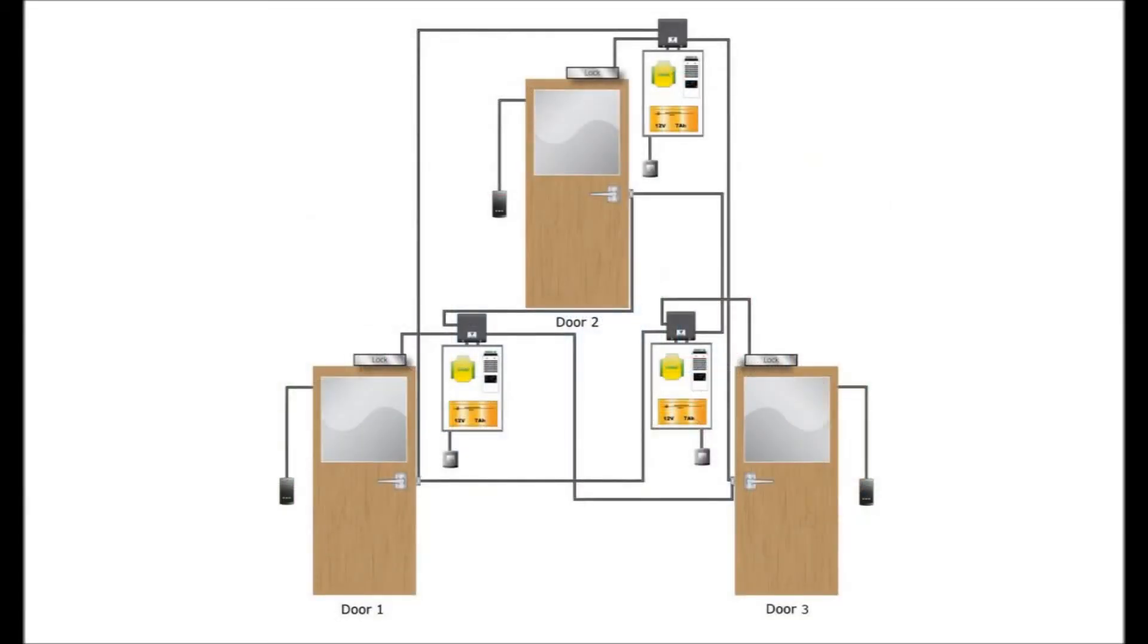A two-door infrastructure requires just one interlock device. If you wish to control more doors, then additional interlocks will be required.